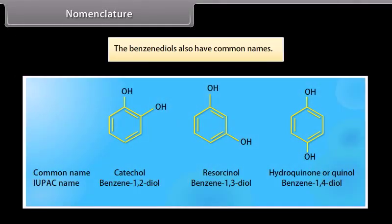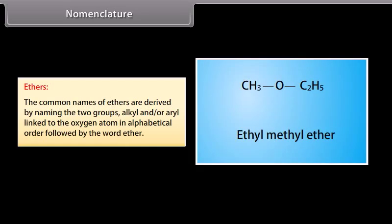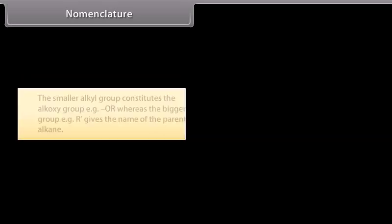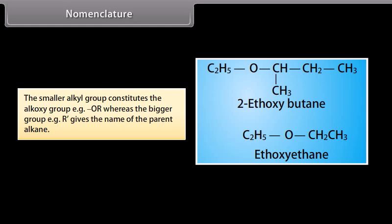The benzene diols also have common names. The common names of ethers are derived by naming the two alkyl and/or aryl groups linked to the oxygen atom in alphabetical order followed by the word ether. In case of symmetrical ethers, the prefix di is attached before the name of the alkyl or aryl group. According to the IUPAC system, ethers are named as alkoxyalkanes. The smaller alkyl group constitutes the alkoxy group (R-O-), while the bigger group (R') gives the name of the parent alkane.